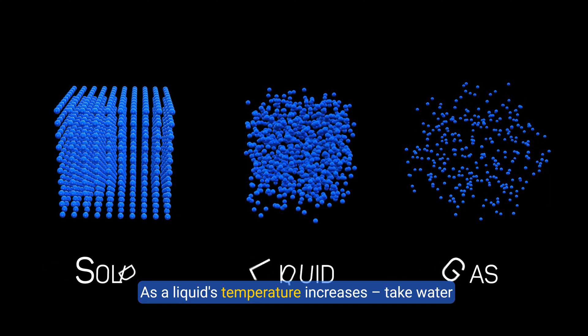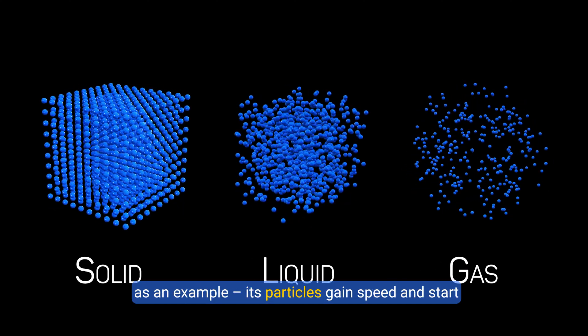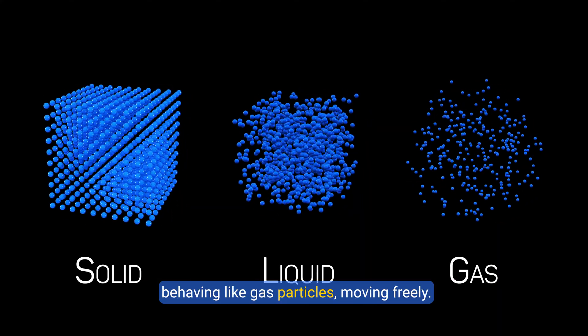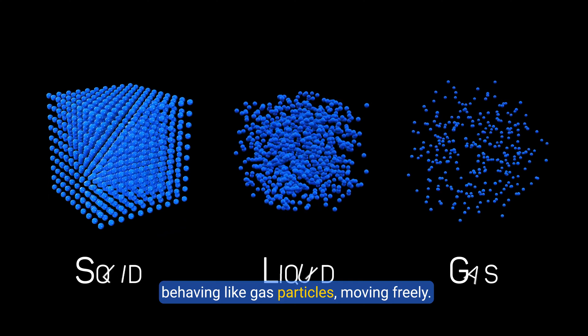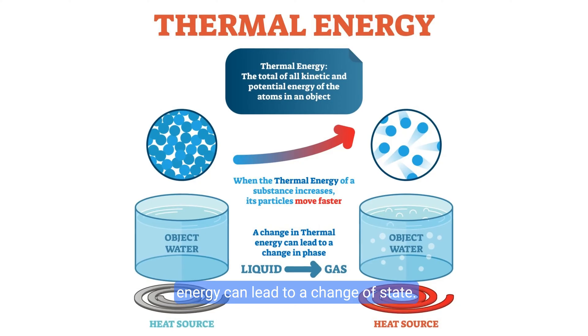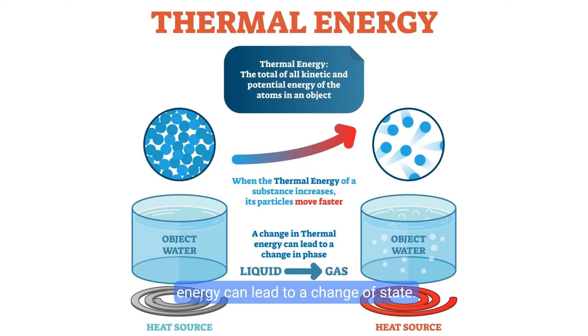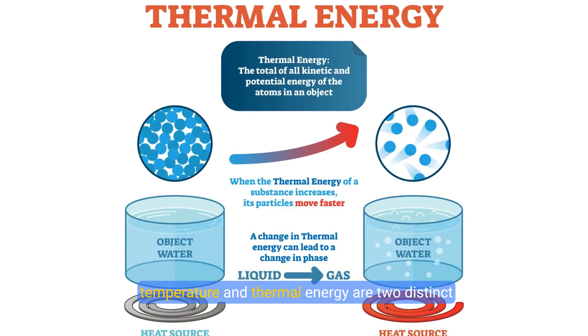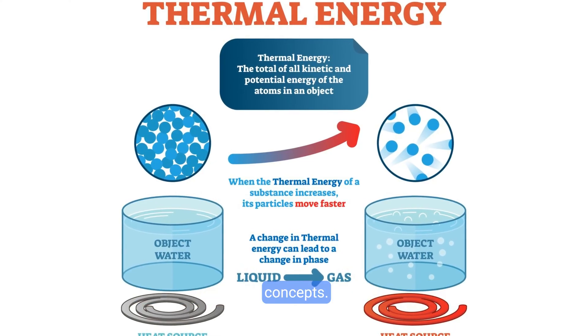Now let's extend this concept to how matter can transform from a liquid to a gas due to thermal energy. As a liquid's temperature increases — take water as an example — its particles gain speed and start behaving like gas particles, moving freely. Here is an overview of the way a change in thermal energy can lead to a change of state.